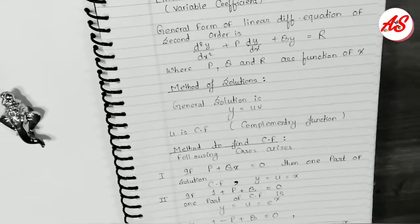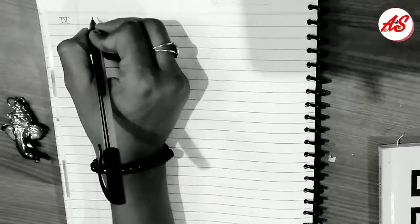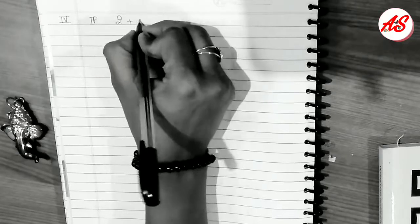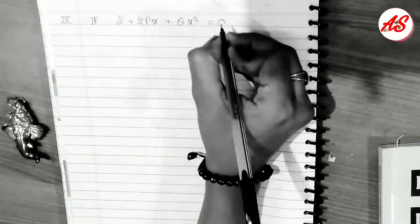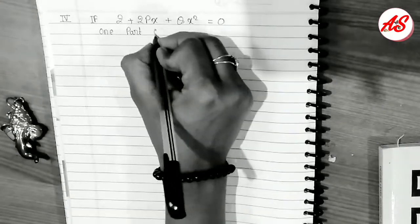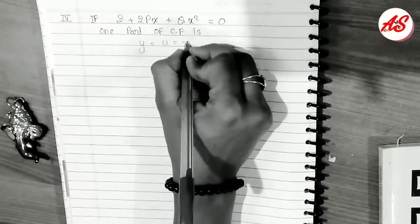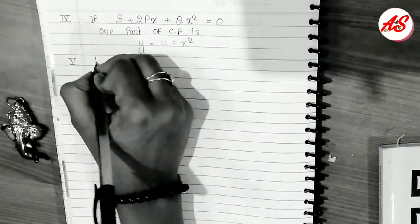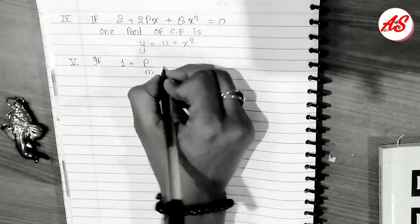The fourth method: if 2 + 2Px + Qx² = 0, then one part of the CF is y = u = x².